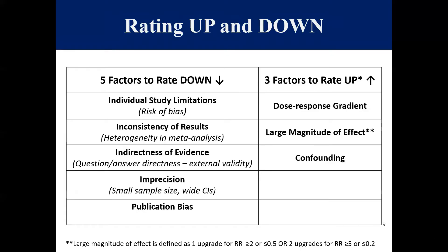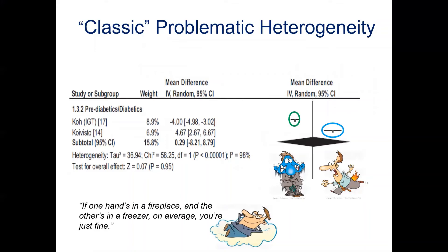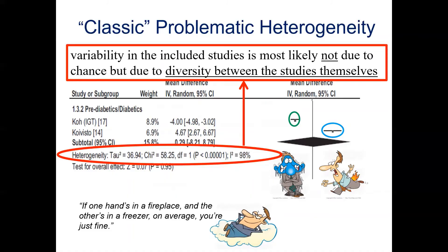The next factor to assess for GRADE is inconsistency of results, which is the heterogeneity in the meta-analysis. Recall the classical example of heterogeneity where we have two studies with opposite results — one showing an increase and one showing a reduction as a result of the intervention. Heterogeneity here is 98%, found beside the I-squared, along with the p-value in the forest plot. If you have substantial and significant heterogeneity, this would result in a judgment to downgrade your certainty in the evidence — that is, reduce how certain you are in the overall estimate of the meta-analysis.